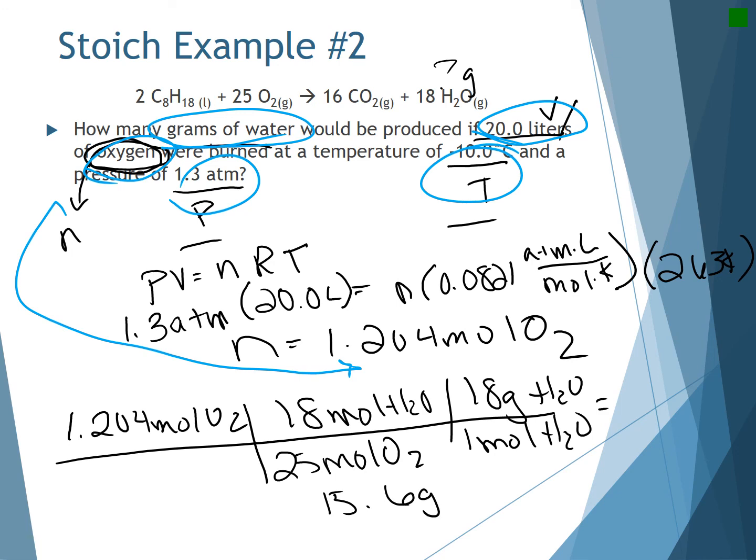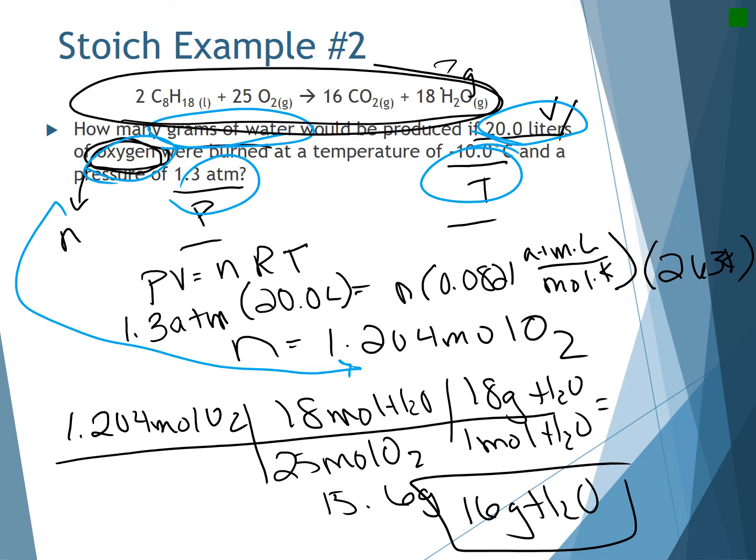Rounded to the two sig figs in the problem because of that 1.3 atm, I get 16 grams of water. Hopefully you have a basic understanding. When you're looking at a stoichiometry problem for gas laws, we will give you somehow a mole amount of one of these substances and ask you about a molar or some other amount of a different thing in one of these equations. So for stoichiometry, you're going to use stoic to convert from moles of one substance to moles or some amount of another substance, and you're going to be using the ideal gas law. Have a great evening.